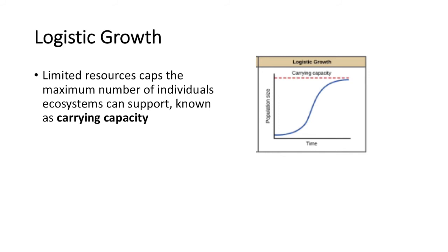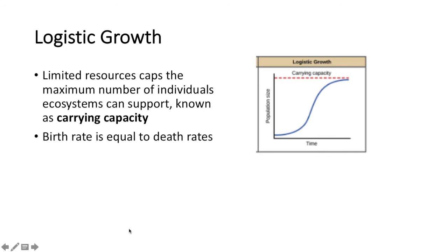Exponential growth typically occurs when that cap hasn't applied and organisms are growing as if they have no limitations. In logistic growth, typically the birth rate is equal to the death rate, so you don't have a lot of population growth because the number of individuals added is the same as the individuals that are leaving.